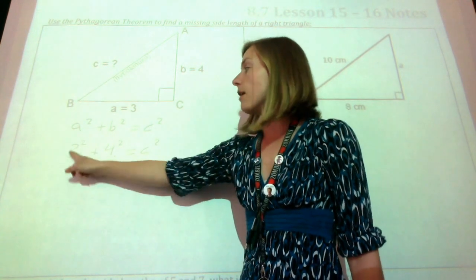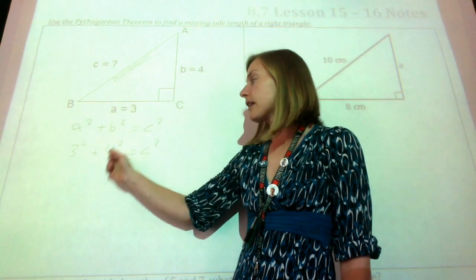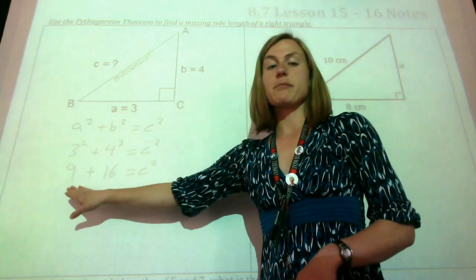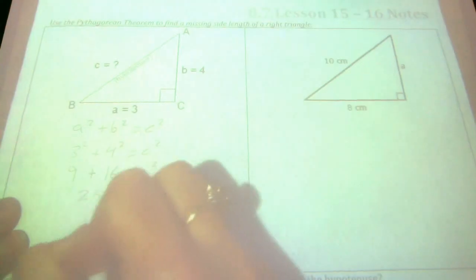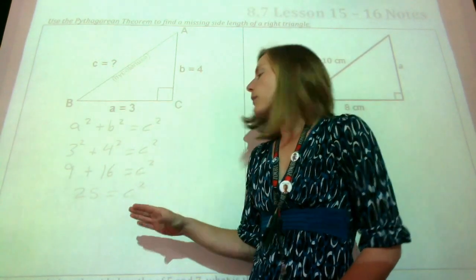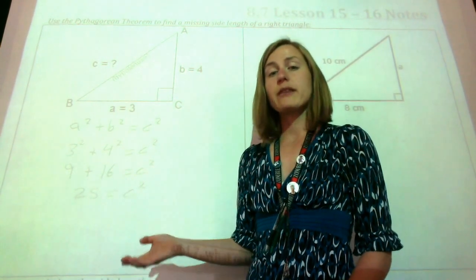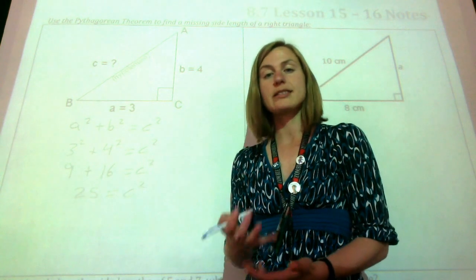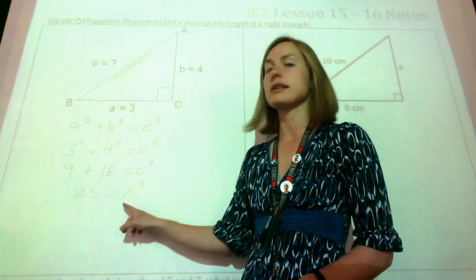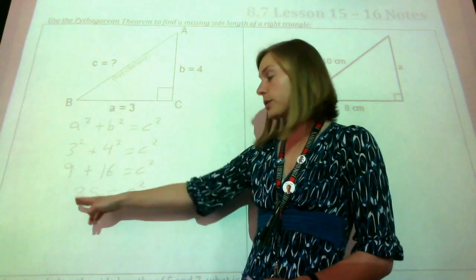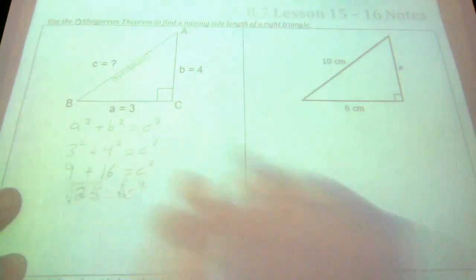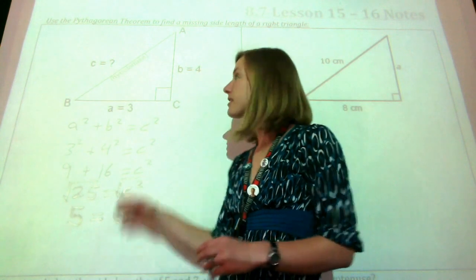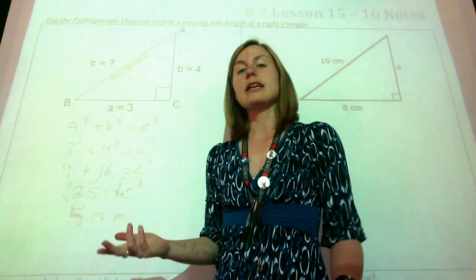So we evaluate: 3 squared becomes 9 and 4 squared becomes 16. Now we combine the 9 and the 16 to get 25. We know that we want c alone, but we have c squared. So if I want c but I have c squared, I'm going to want to square root that to get regular c. But we can't just do one side — whatever I do to one side, I have to do to the other. So we're going to square root the 25. The square root of 25 is 5, so that missing side length — the hypotenuse of this triangle — is 5.